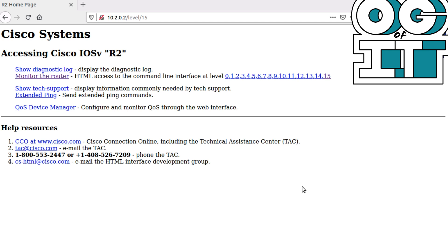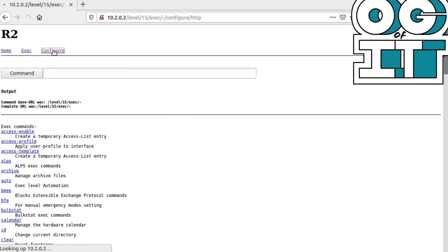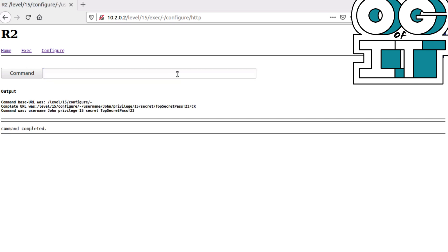So here we are with the web browser. If we go to monitor and then we go to configure, let's create a new user account. So let's create a new username called John privilege 15 secret top secret pass exclamation mark two three, and we'll press enter and bada bing bada boom. We just created a new user account. We're managing our router.